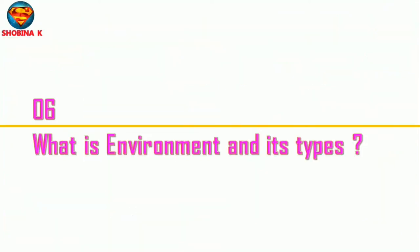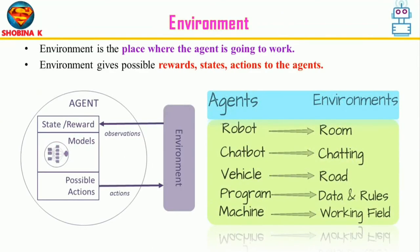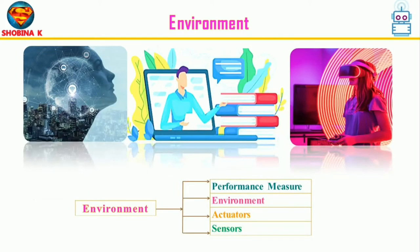The task environment is the problem for which agents are the solutions. The environment is where the agent operates, providing possible rewards, states, and actions to the agents. It can be the physical world, the real world, or a virtual one. The task environment is comprised of performance, environment, actuators, and sensors — and the first step in designing an AI agent is to specify this task environment.